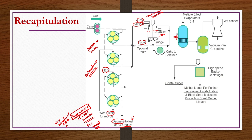Sludge or mud collected at the bottom of the continuous thickener is taken to a rotary drum filtration unit to extract any juice present in it. That may contain some sucrose, which is extracted, quality-checked, and recycled back to the continuous thickener. The cake is taken as fertilizer or discarded as waste. The juice coming out of the continuous thickener contains 80 to 85 percent water.